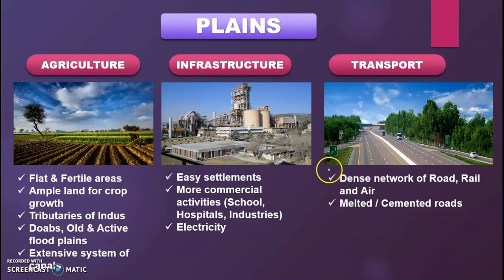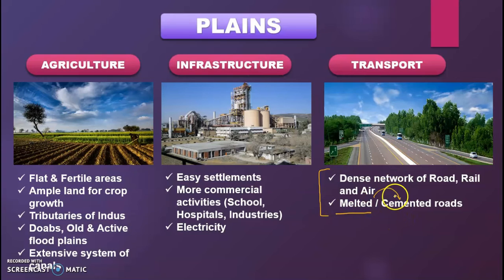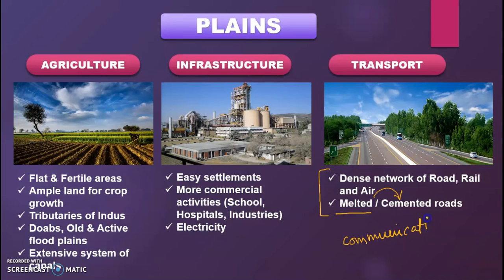The next point is the transport network, linked again to economy and lifestyle. This area has a dense network of roads, rail, and air routes, making communication much easier compared to mountains, where there is a single road network and less connectivity. In the plains, it is easier to develop roads, rail, and air networks, and there is ample surface for airports. These areas have metalled, cemented routes. The better and denser road network means communication is much better, which relates directly to lifestyle and economy.